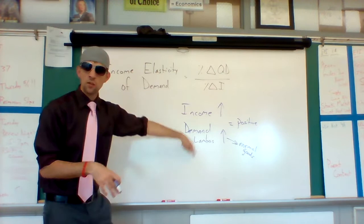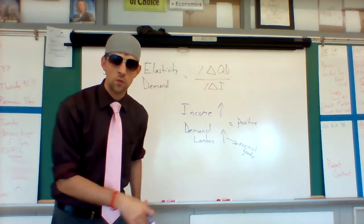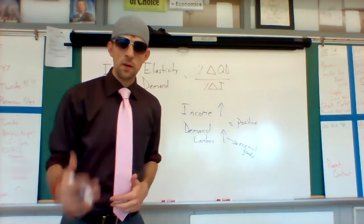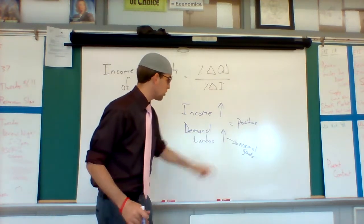And if you think about it in the reverse, if the income goes down, you're going to demand fewer Lambos. So you've got a negative number and a negative number up there. Still negative divided by negative gives you a positive number. You get a normal good. However.